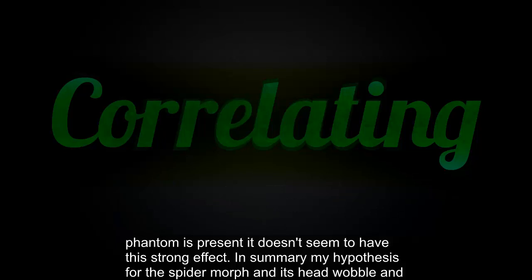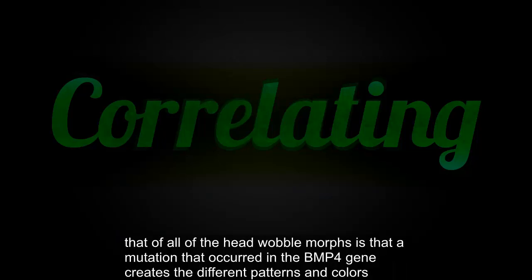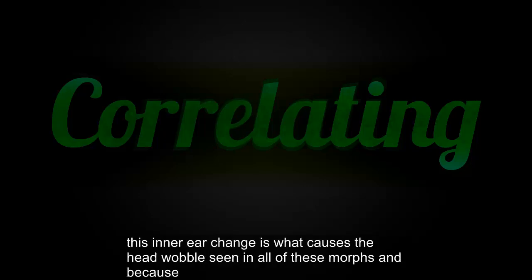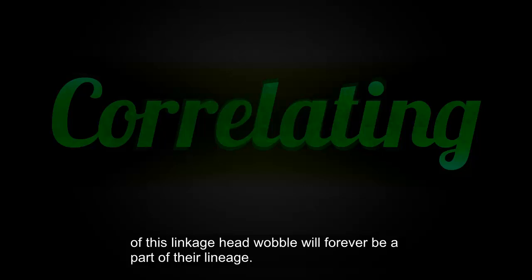In summary, my hypothesis for the spider morph and its head wobble — and that of all of the head wobble morphs — is that a mutation that occurred in the BMP4 gene creates the different patterns and colors associated with these morphs, but also inadvertently causes a functional reduction of the snake's inner ear. This inner ear change is what causes the head wobble seen in all of these morphs, and because of this linkage, head wobble will forever be a part of their lineage.